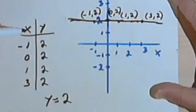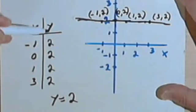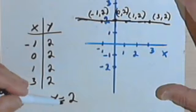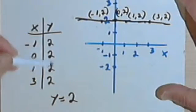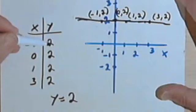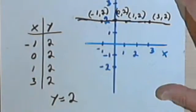In terms of a table of values, it's pretty boring. The table of values will have, in this case, a y, whatever the constant number is, everywhere in that column. And you can put any number you want in the x column, you'll still get a 2, in this case in the y column.